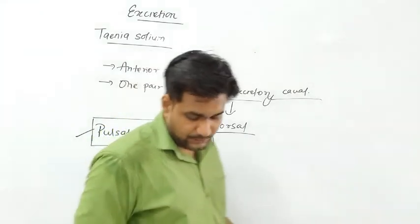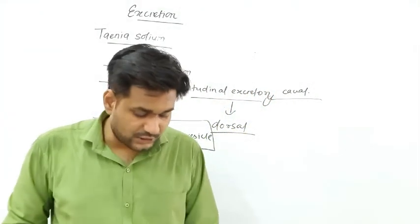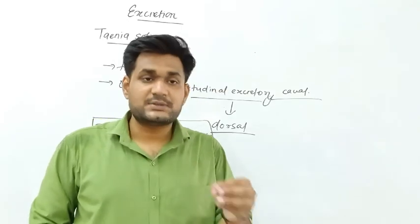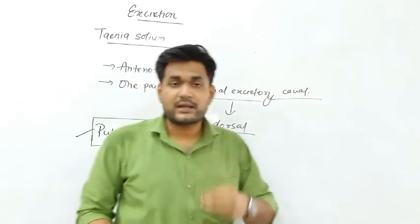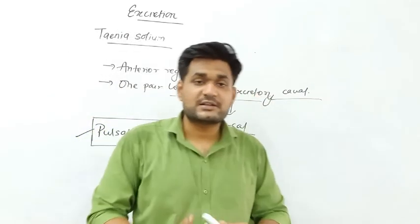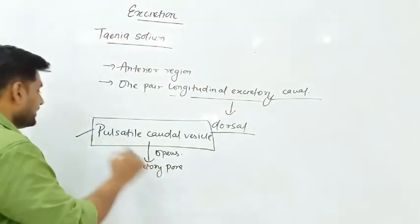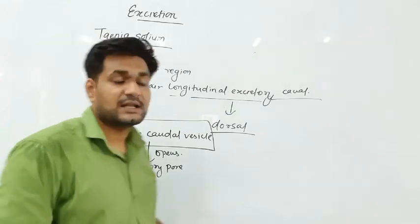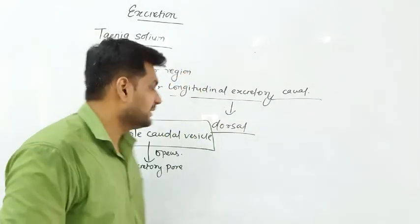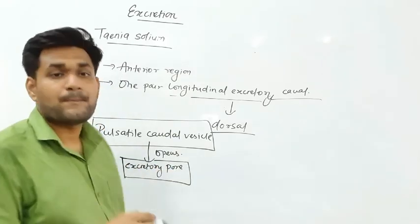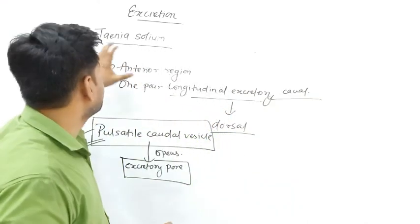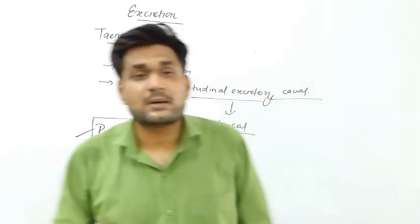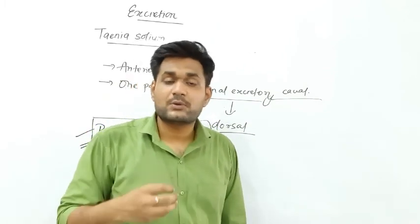The excretion process involves metabolites — the nitrogenous waste products made by the body — which enter into the flame cells. From the flame cells the excretory products pass into the lumen where the cilia are present. This is the contractile vacuole-like model. The excretory products then pass to the Pulsatile Bladder Vesicle and exit through the excretory pore.